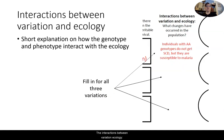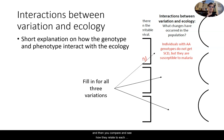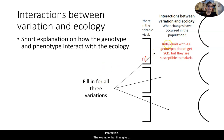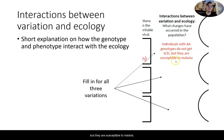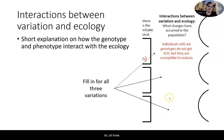The interactions between variation and ecology section takes those first two columns and compares how they relate to each other — how they interact. This is going to be a really short explanation that shows that genotype-phenotype interaction. The example given for AA shows that individuals with AA genotypes do not get sickle cell disease, abbreviated SCD, but they are susceptible to malaria. So take that and fill in all three variations — the first one is filled in for you on the top part.